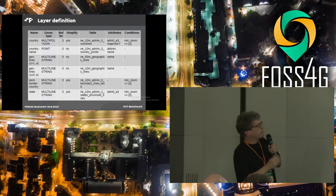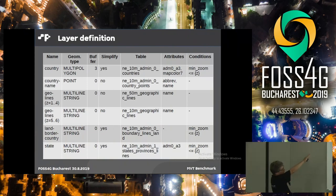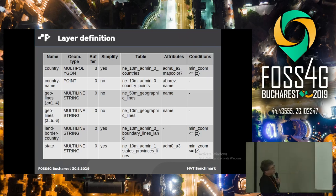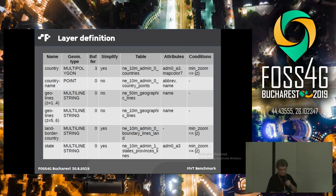We also split one layer into two sources: one table for zoom levels 1 to 4 and another table for levels 5 and 6. That's more for assuring that the tile server has this important capability.